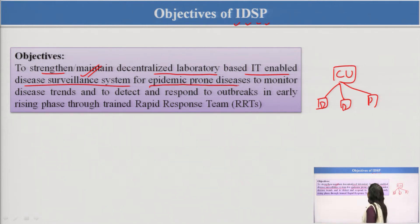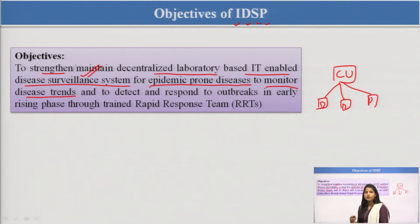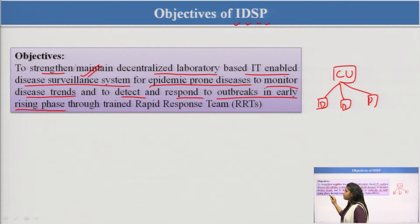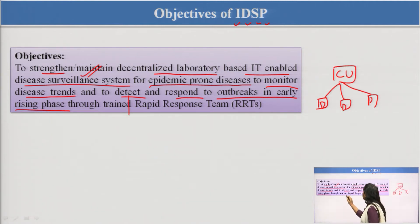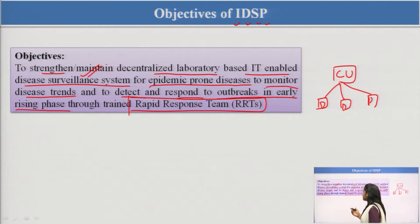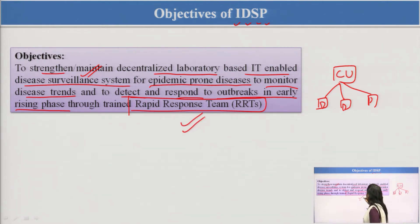Another objective is to monitor disease trends for epidemic-prone diseases. They will observe disease trends, detect them, and respond to outbreaks in the early rising phase to control them at early stages. There is a team called the Rapid Response Team, or RRT, managing these diseases. Its members include doctors, pharmacists, and social activists.